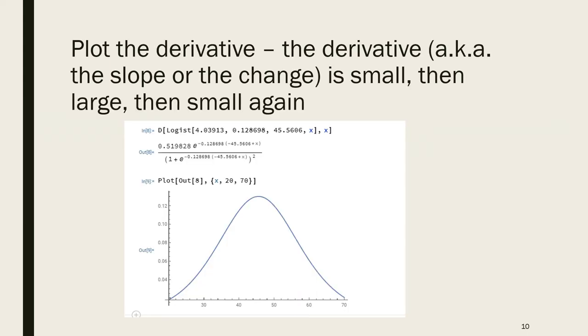We can plot that derivative. The derivative is the slope, the change. We see it's what we expect for a logistic function - the change, the slope is small in the beginning, then rises up, then becomes small again.